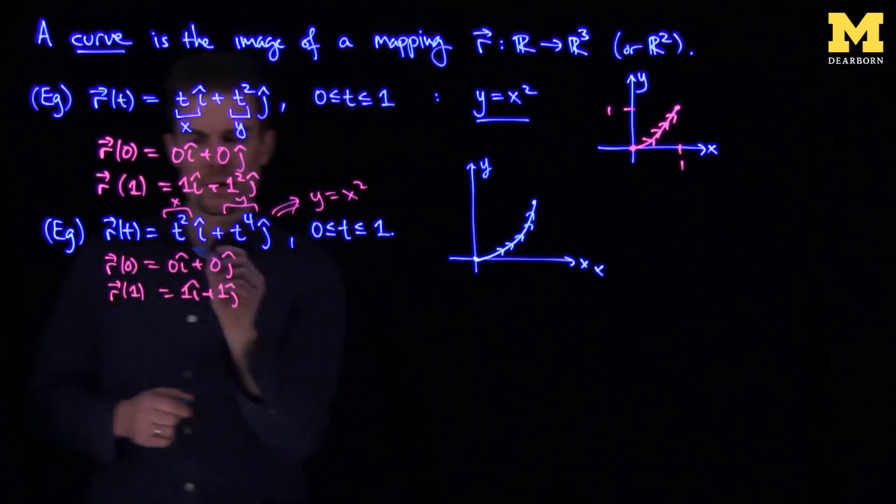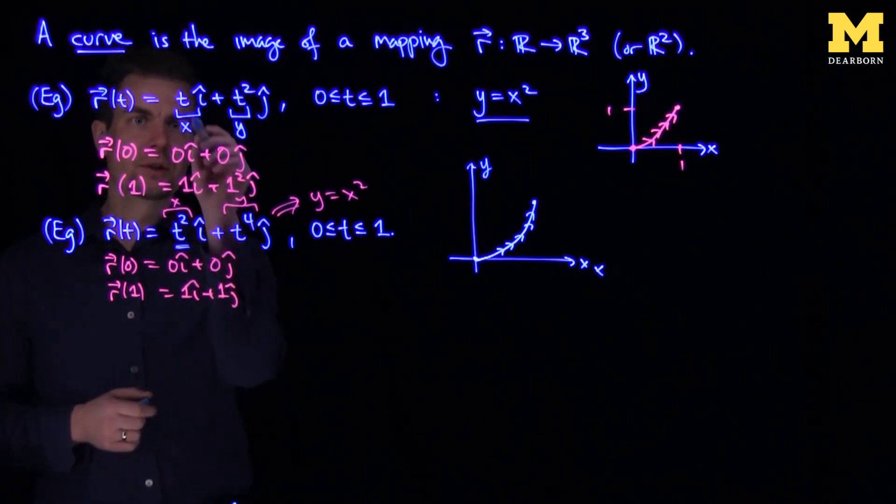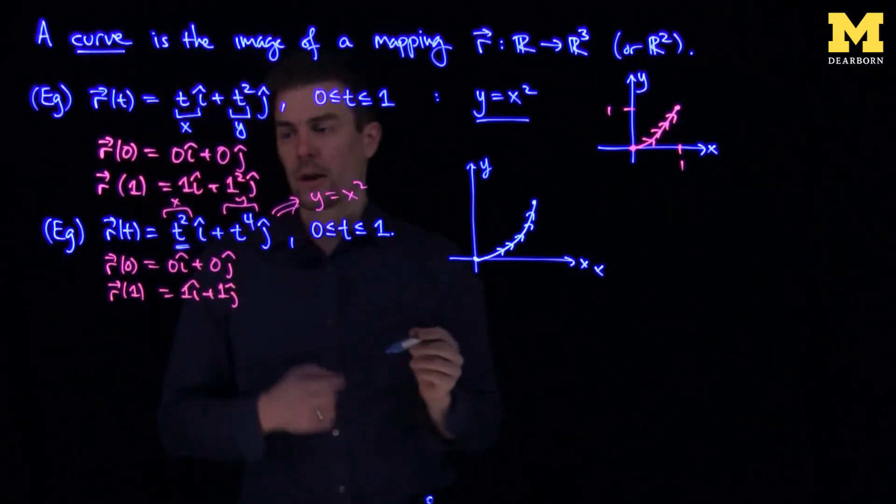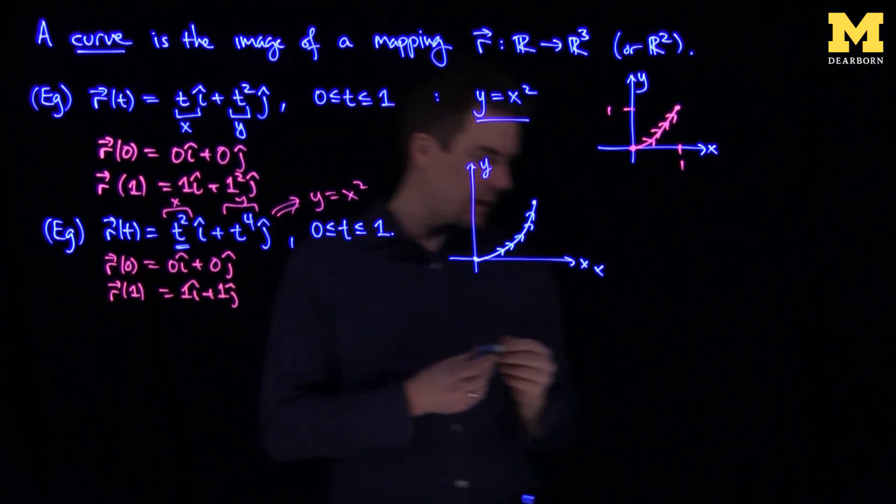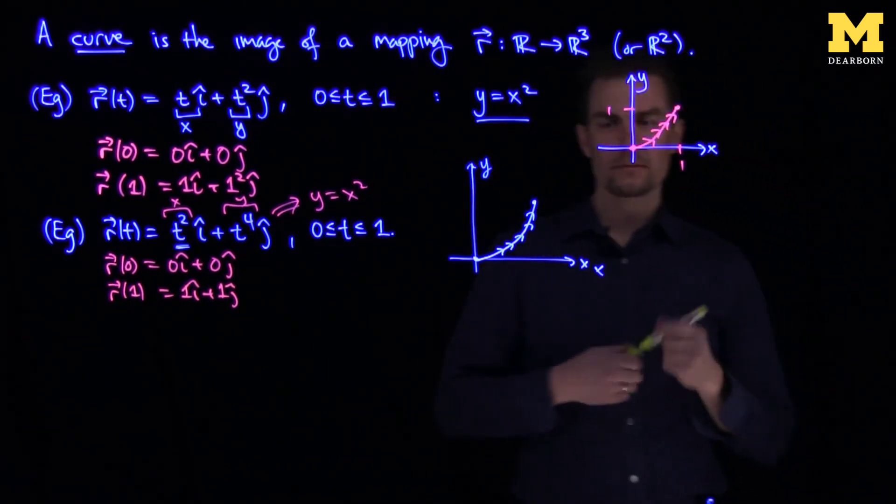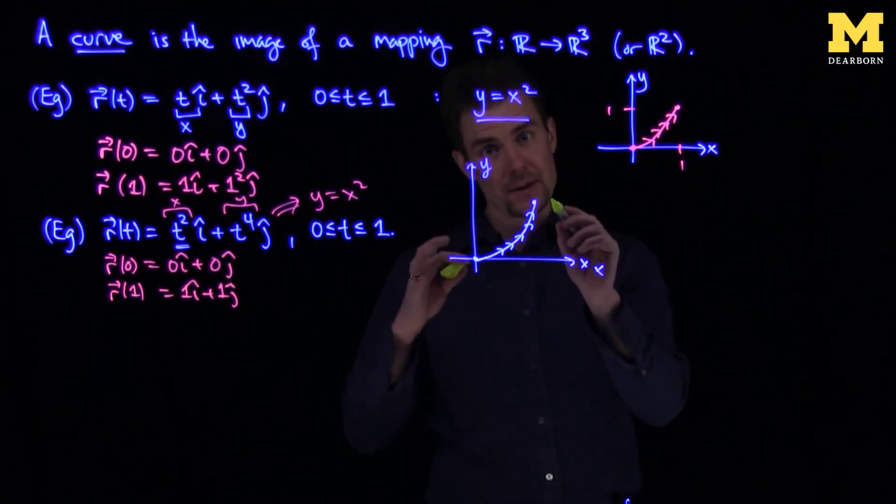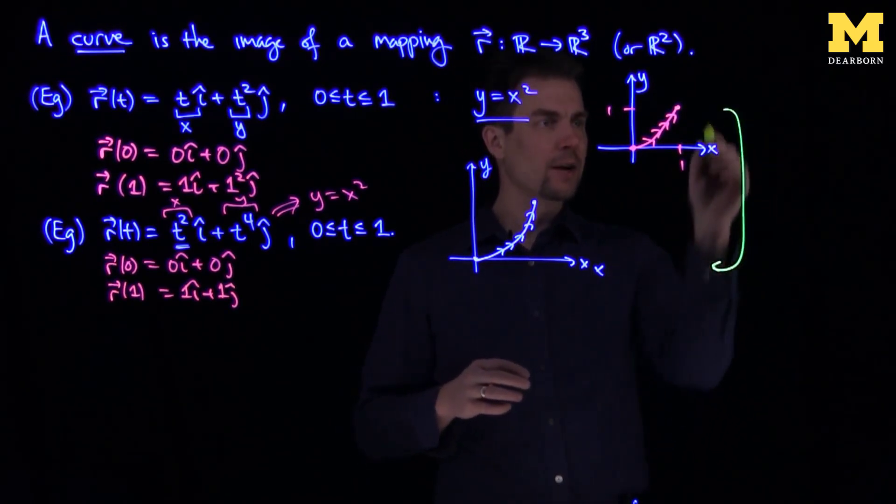But this curve would move a little bit slower. Because if t is between 0 and 1, t-squared is much less than t. So these curves have different speeds. Even though the image is exactly the same, they trace out at different speeds.